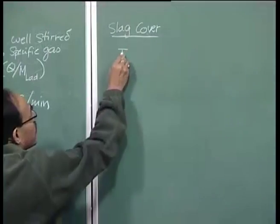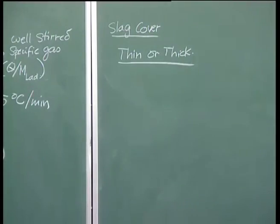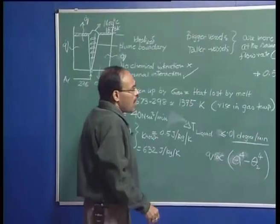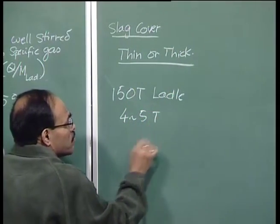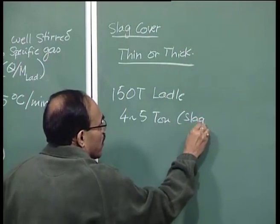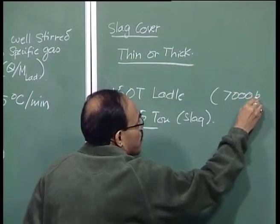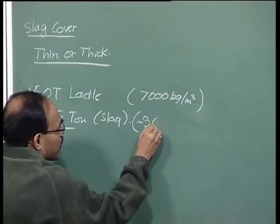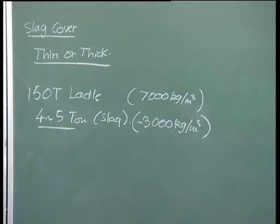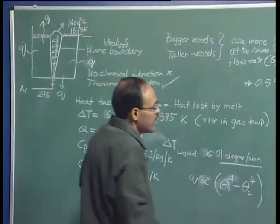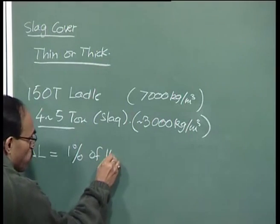The slag cover can be thin or thick. In a 150-ton ladle with about 4–5 tons of slag, converting this to height using slag density of approximately 3000 kg/m³ shows that the thickness of the slag in industrial processes is approximately a maximum of 1 percent of the bath depth. The slag used is not an oxidizing slag — it does not contain FeO — but freshly prepared slag with some lime, silica, and so on.